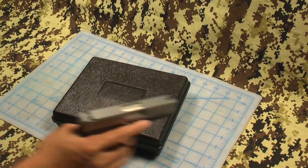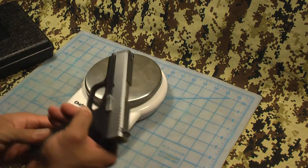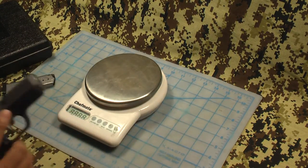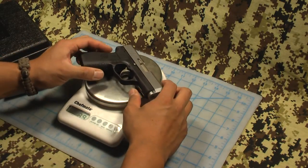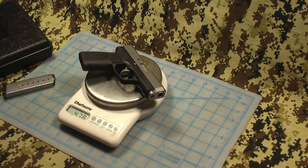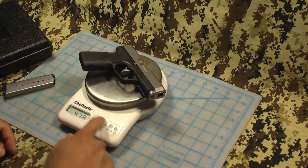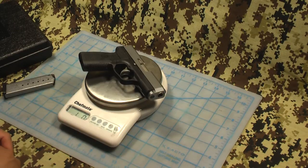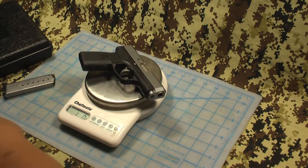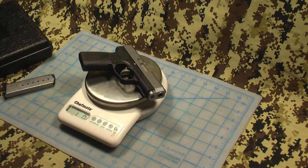This weighs, let me go ahead and put a scale on here for you. I am going to do both with and without the magazine. Without the magazine, just the firearm is 478 grams, which is 1 pound 7/8 ounces, which is 16 and 7/8, almost 17 ounces.